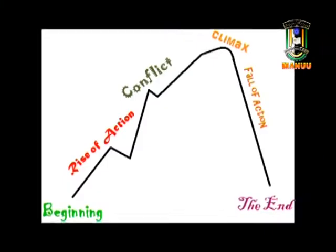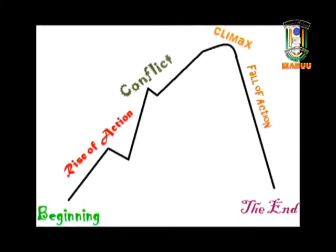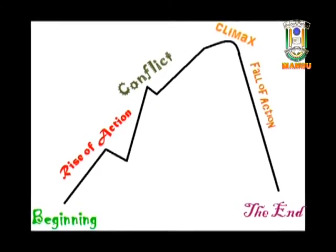Sometimes it has a single main plot. But depending on the demands of the theme and the nature of drama, it can also have sub-plots. A plot has a beginning and rise of action, conflict, climax, fall of action, and end. A plot begins with some event and leads to the next event and so on. These events have a cause and effect relationship, which means the first event causes the second event to happen, and the second event is the result of the first event.